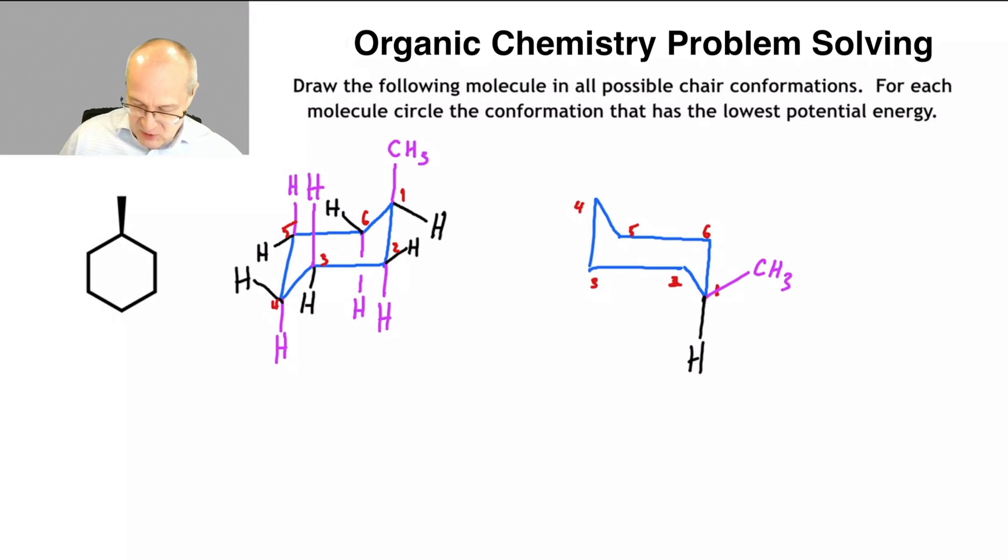Now, let's keep drawing in our stuff. What was once equatorial is now axial. What was axial is now equatorial. But the up down does not change. That's how you would draw them. That's how you draw all the hydrogens into a chair cyclohexane.